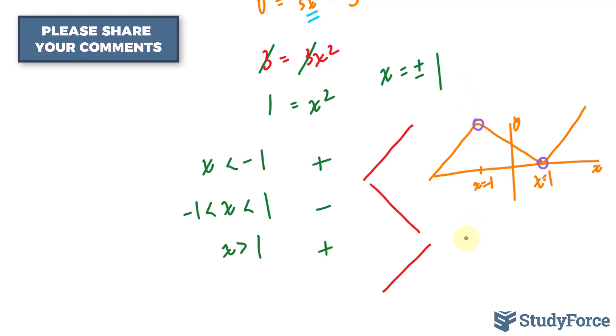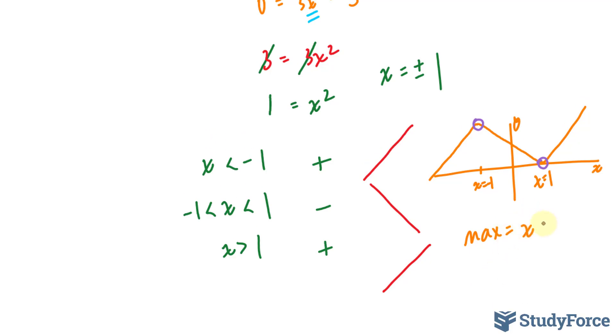Therefore, there is a maximum when x is equal to negative 1, and there is a minimum when x is equal to positive 1.